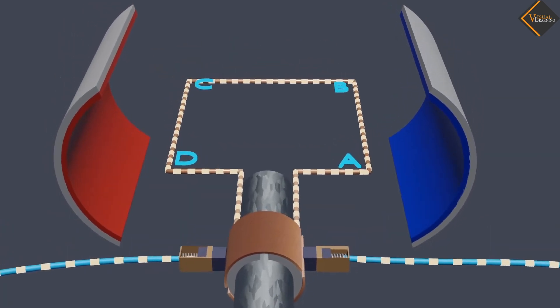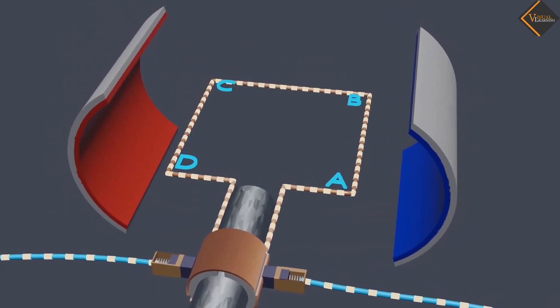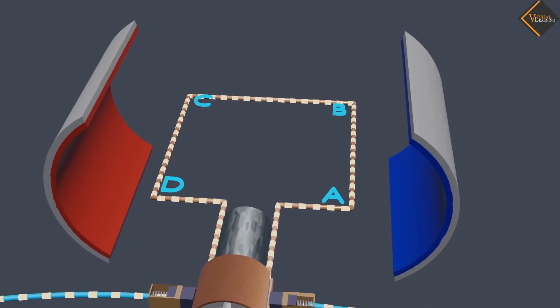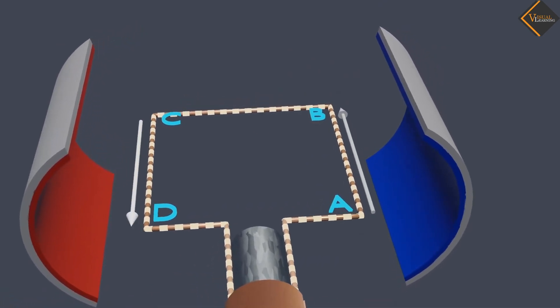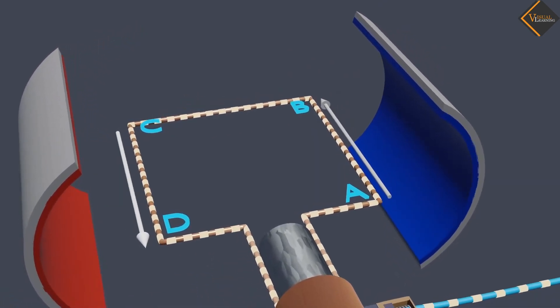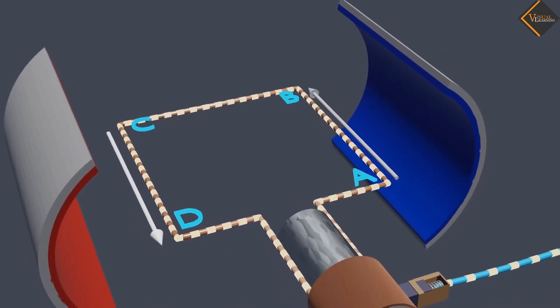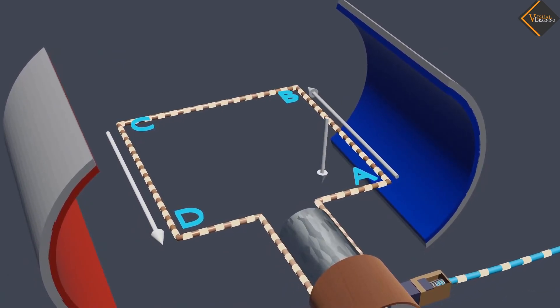The reversal of current also reverses the direction of force acting on the two arms A, B and C, D. Thus the arm A, B of the coil that was earlier pushed down is now pushed up.